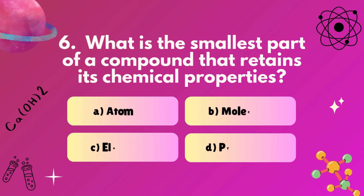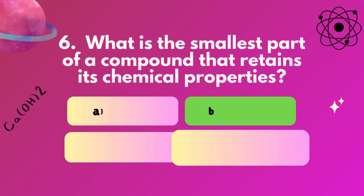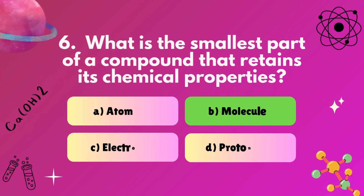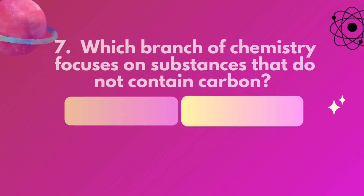Question 6: What is the smallest part of a compound that retains its chemical properties? A, atom. B, molecule. C, electron. D, proton. Correct answer: B, molecule.